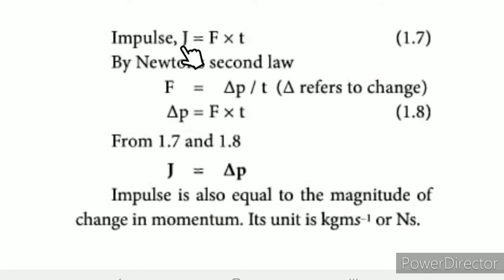Impulse is denoted by symbol J. Impulse J equals F times t (equation 1.7). By Newton's second law, F equals delta p divided by t, where delta refers to change. Therefore delta p equals F times t (equation 1.8). From equations 1.7 and 1.8, comparing the right hand side and left hand side, J equals delta p.